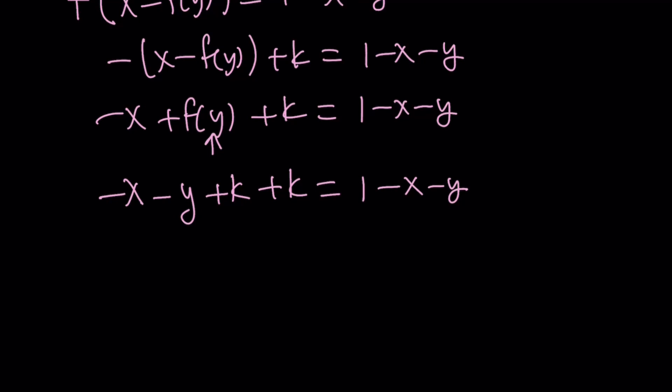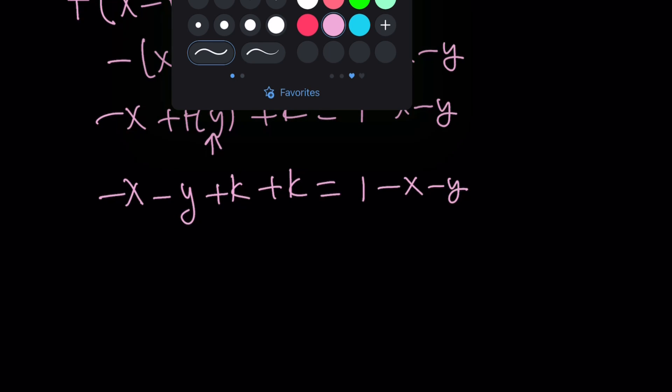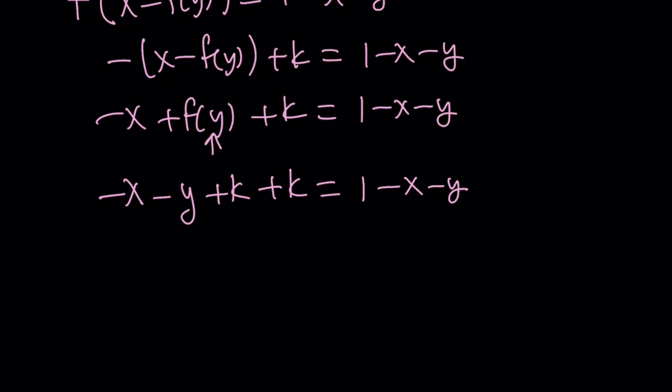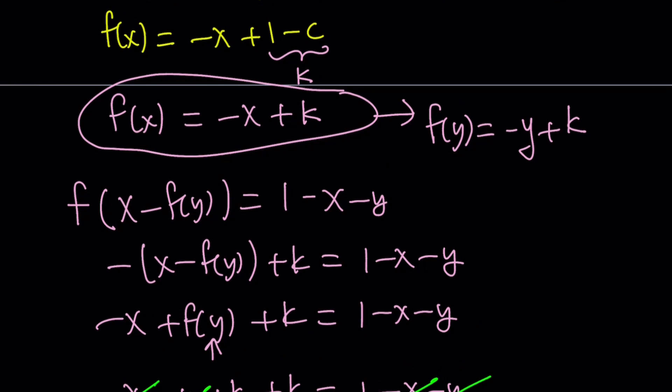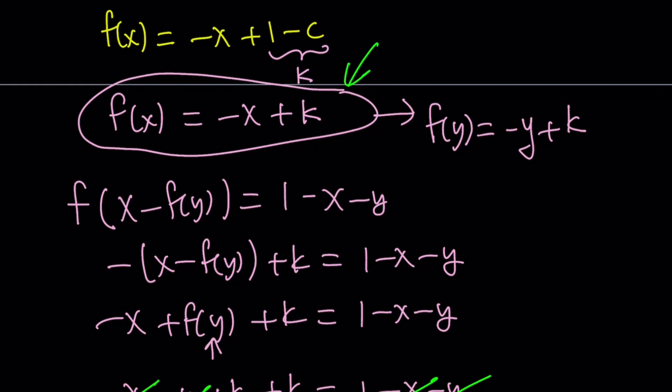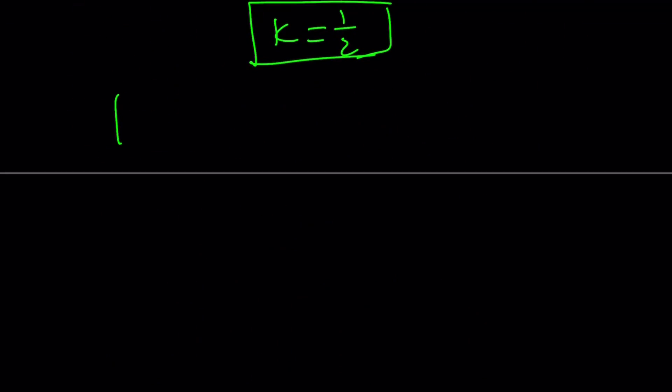Now since we got f(x) = -x + k, f(y) from here by replacing x with y becomes -y + k. So we can go ahead and substitute that here. Replace f(y) with -y + k plus another k, equals 1 - x - y. Obviously in these scenarios x and y should both cancel out, leaving us with constants only. We get 2k = 1, which means k = 1/2. Since we found the value of k, we can go ahead and substitute it into this equation and find the value of f. So from here f(x) becomes -x + 1/2. And that is going to be the solution to our equation.